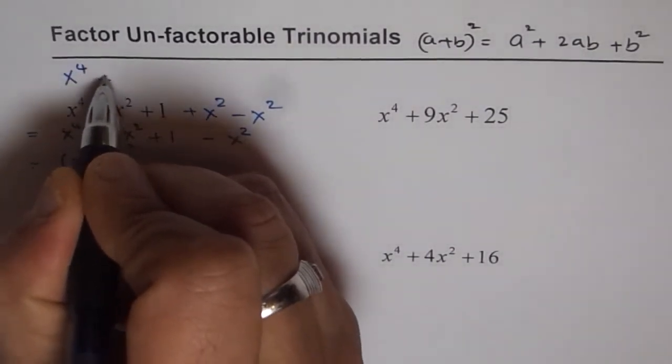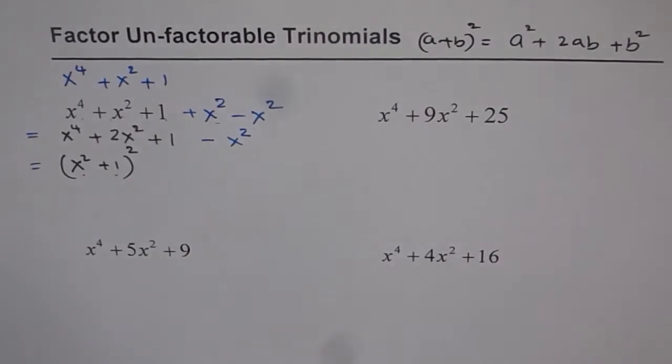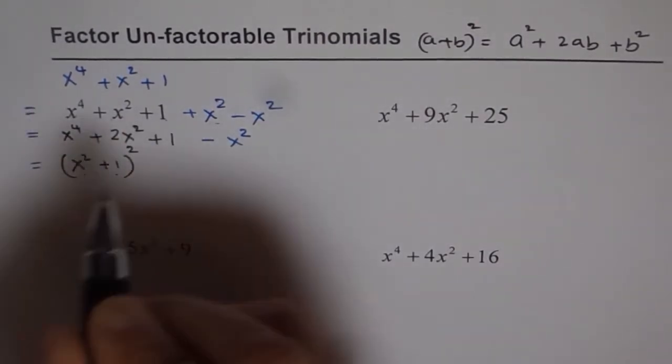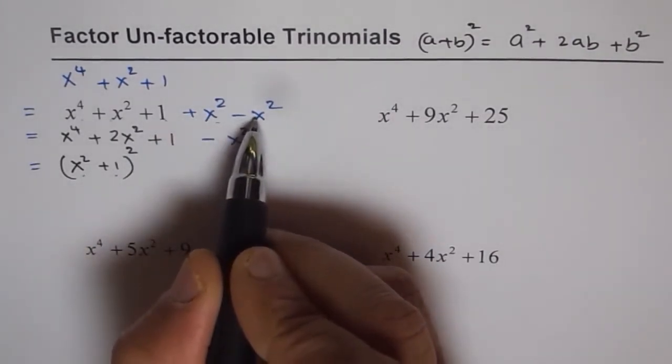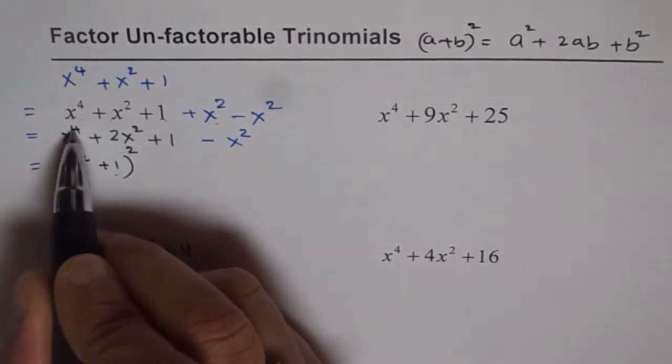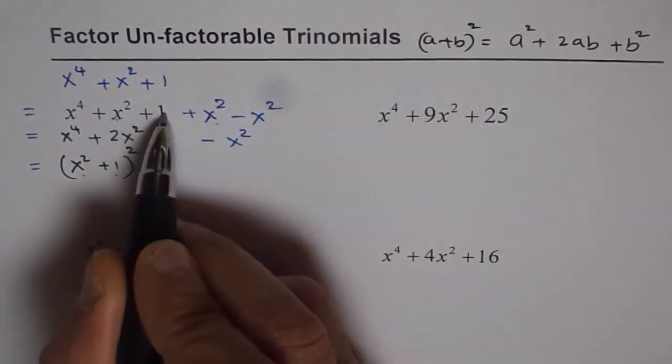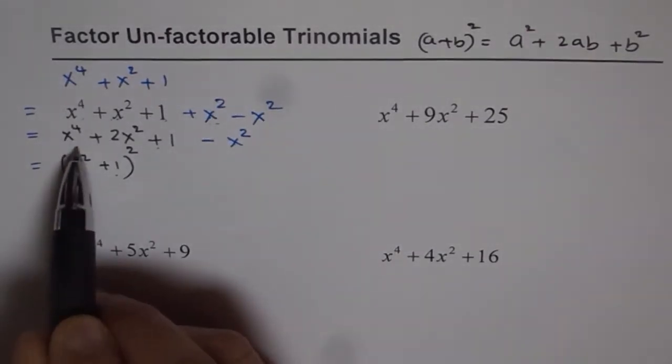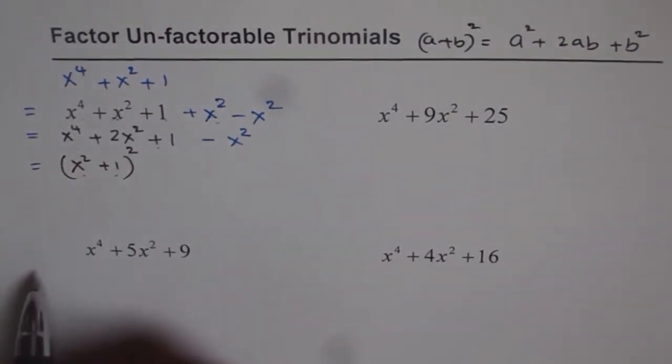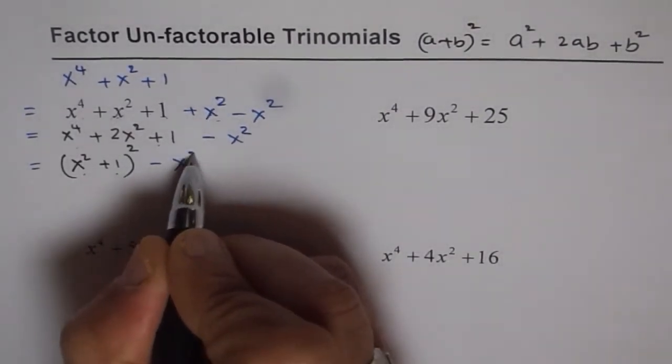Let me write down the original trinomial separately. That is x⁴ + x² + 1 is from where we started. And then we added x² - x² to that. When you add x² - x², then you get x⁴ + 2x² + 1 - x². Now we got these three terms as a perfect square: (x² + 1)². Do you see that? And -x².